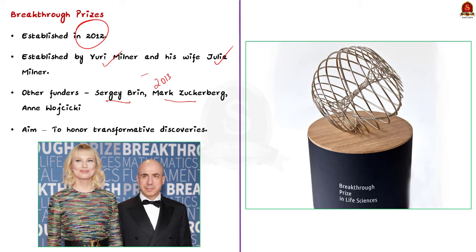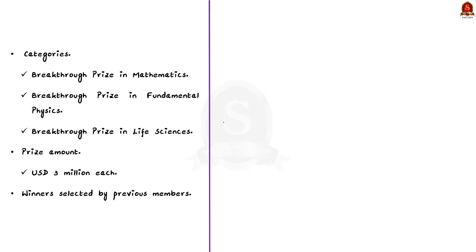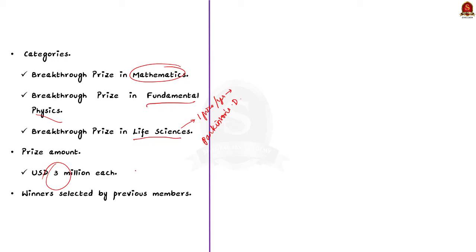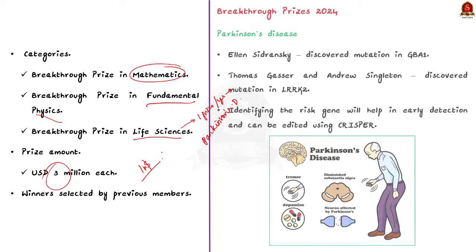The main aim of the Breakthrough Prize is to honor those who have made transformative discoveries. The award is provided in three categories: Breakthrough Prize in Mathematics, Breakthrough Prize in Fundamental Physics, and the Prize for Life Sciences — awarded to recognize significant contributions to understanding complex life processes. Notably, one prize per year in life sciences is designated for work contributing to the understanding of Parkinson's disease and neurodegenerative disorders. Breakthrough Prize laureates receive three million dollars in prize money, compared to one million dollars for Nobel laureates, making it more rewarding. Laureates are selected by a committee of previous prize winners in each respective field.